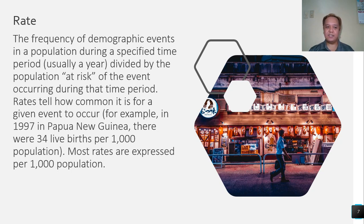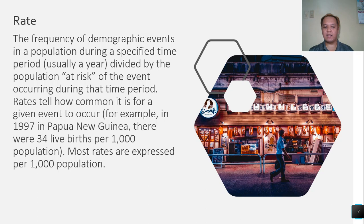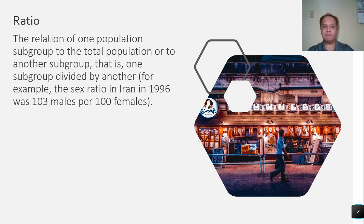Rate — the frequency of demographic events in a population during a specified time period, usually a year, divided by the population at risk of the event occurring. The rate tells how common it is for a given event to occur. For example, in 1997 in Papua New Guinea, there were 34 live births per 1,000 population. Most rates are expressed per 1,000 population.